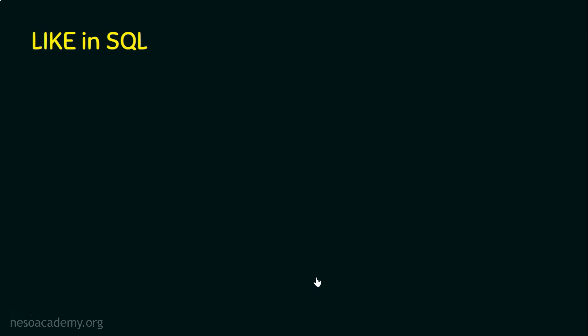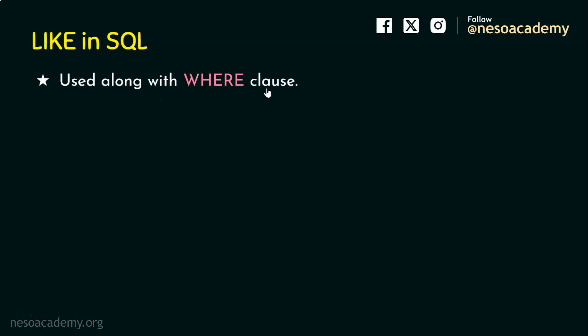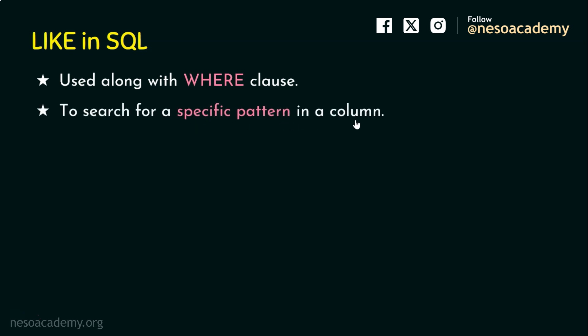We are going to introduce the LIKE keyword, which is used along with the WHERE clause. We know WHERE filters records based on conditions, so we are going to increase the power of WHERE by using the LIKE keyword. LIKE is going to search for a specific pattern in a column. A table is made of rows and columns, and we use WHERE by specifying the column — for example, WHERE city = 'Bangalore' or WHERE age > 18.